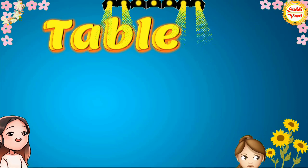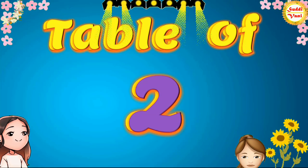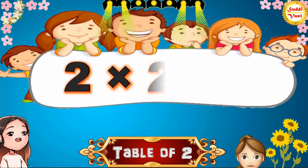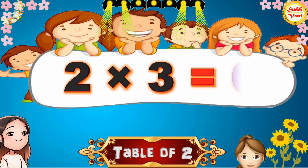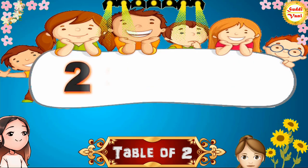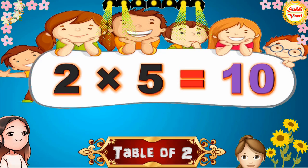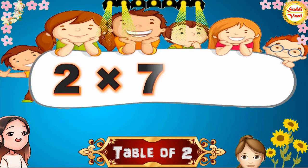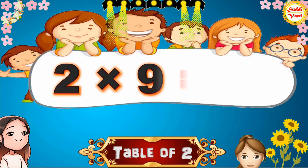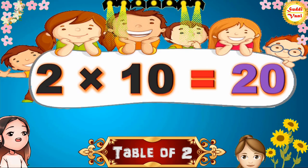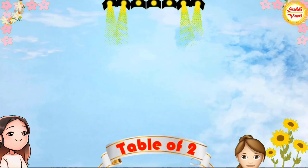Hello children, we will learn table of 2. 2×1=2, 2×2=4, 2×3=6, 2×4=8, 2×5=10, 2×6=12, 2×7=14, 2×8=16, 2×9=18, 2×10=20. Once again,